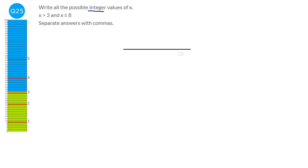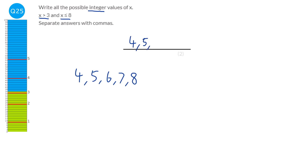An integer just means a whole number. We're looking for all the whole numbers that satisfy both inequalities. The first says it has to be greater than three, so the smallest is four. The second says it has to be less than or equal to eight, so we keep going up to eight — nine is not less than or equal to eight. Our answer is 4, 5, 6, 7, and 8.